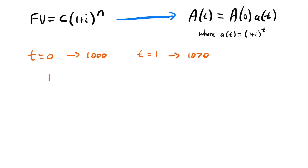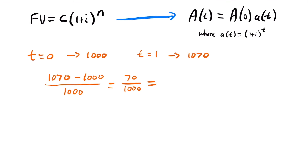We take $1,070 minus the initial $1,000, divided by that initial $1,000, giving us 70 divided by 1,000, which equals 0.07 or 7% interest — our annual effective interest rate. If you plug this rate and the $1,000 initial deposit into the accumulation formula for one year, you'd get $1,070 as your future value, confirming the result.